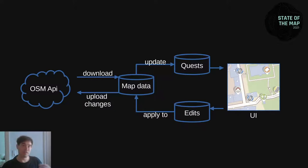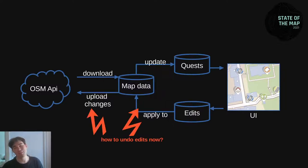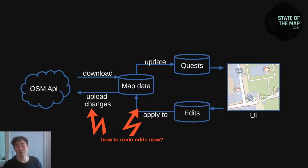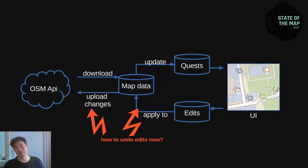But for StreetComplete, this has a few problems. First of all, it's now really difficult to undo the edits. Before, we could just remove an edit from the database. But now the edits are applied to the map data, so we would need to reverse the edits somehow — and that needs code. For simply tag changes, this is trivial. But imagine reverting the splitting of a way — that's quite complex.